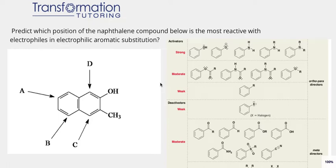Predict which position of the naphthalene compound below is the most reactive with electrophiles in electrophilic aromatic substitution. What we have here is two benzene rings attached to one another in a molecule called naphthalene. One of the benzene rings on the right has two substituents, OH and CH3, and the other does not.